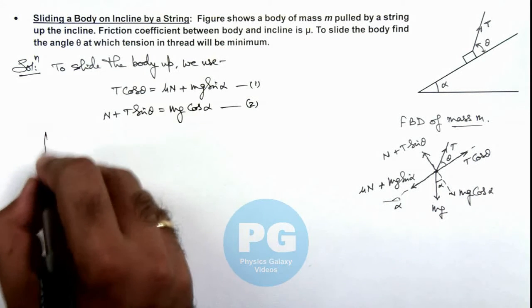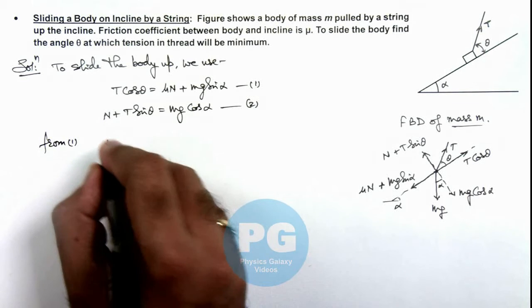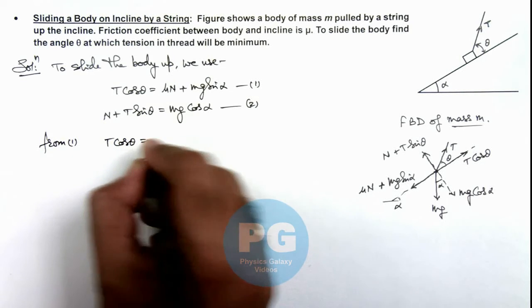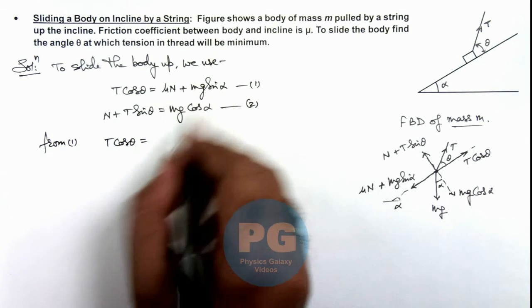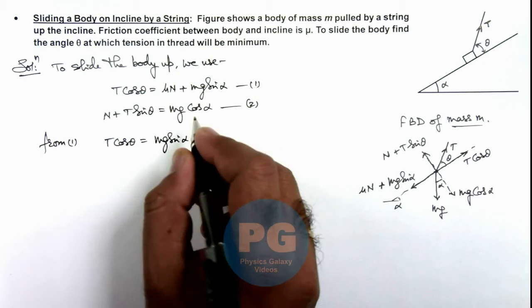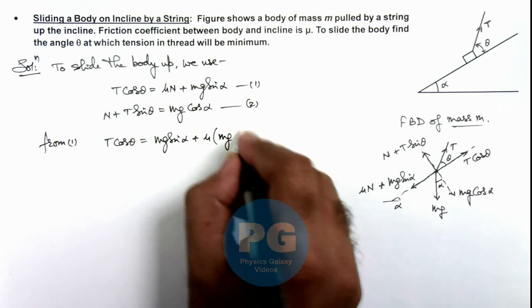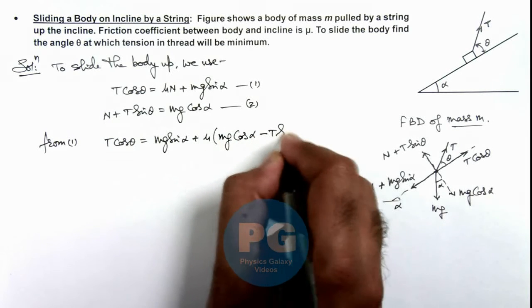Now from equation 1, we can see the value of T cos θ we are getting is mg sin α plus μN. In the value of N we can write as mg cos α minus T sin θ.